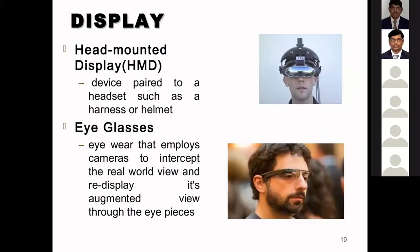The first display type is the head-mounted display — a device attached to a headset such as a harness or helmet. Another type is eyeglasses, where cameras intercept the real world view and redisplay its augmented view through the eyepiece.